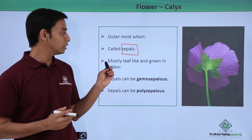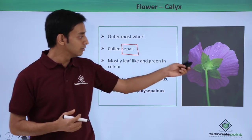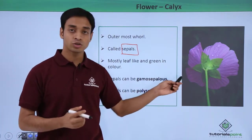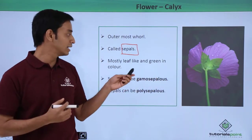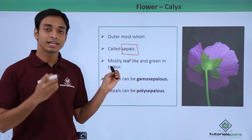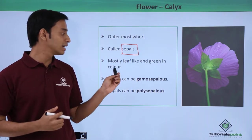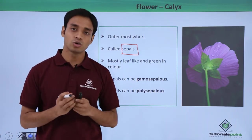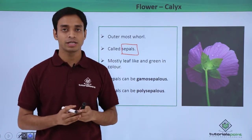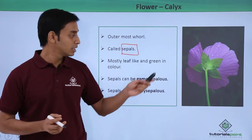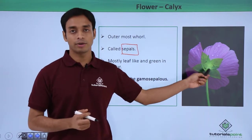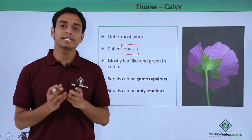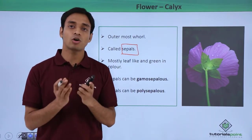Sepals look mostly like leaf-like structures, as you can see over here — they look like leaves and they are green in color. They are green in color because they have the presence of chlorophyll in them. Sometimes these sepals, or the calyx, can be present in a united or fused form.